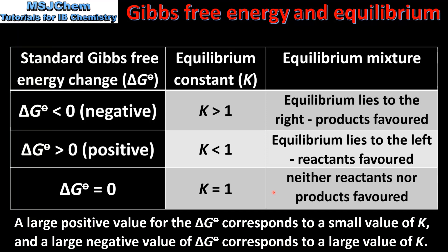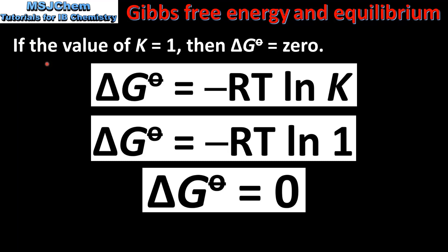Next we look at why the standard Gibbs free energy change is 0 when the equilibrium constant K equals 1. In the equation ΔG° = -RTlnK, we take the natural log of K. The natural log of 1 is equal to 0, so when K equals 1, the standard Gibbs free energy change is equal to 0.